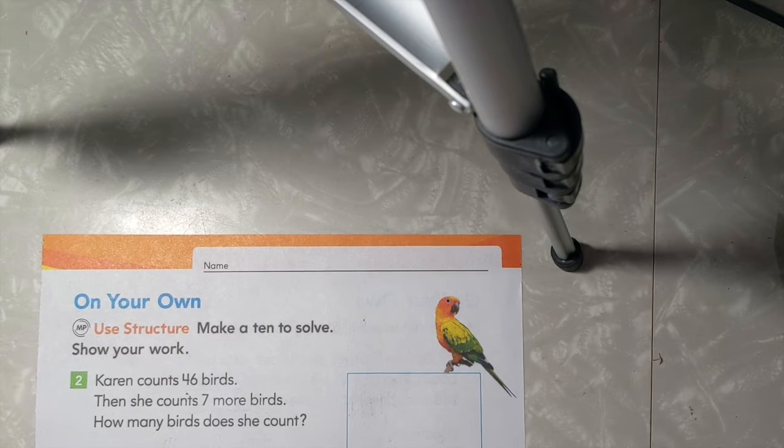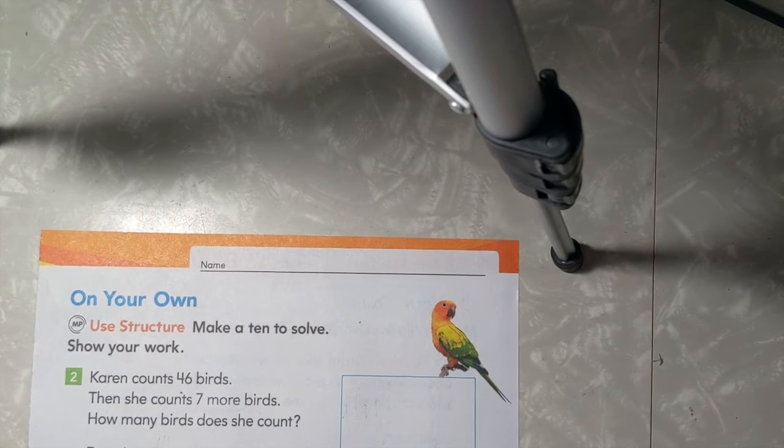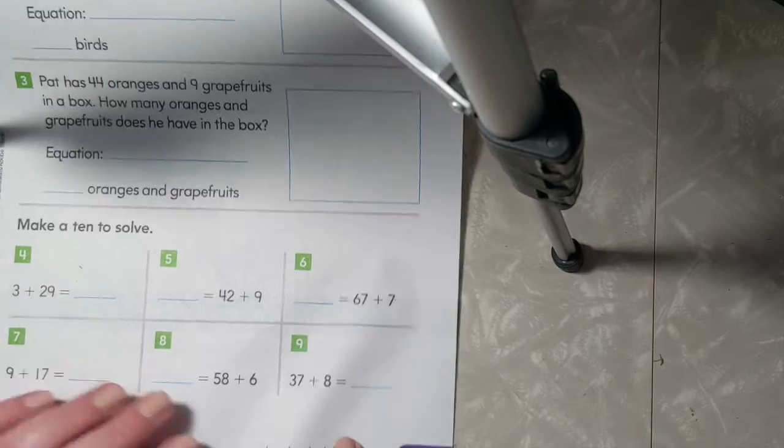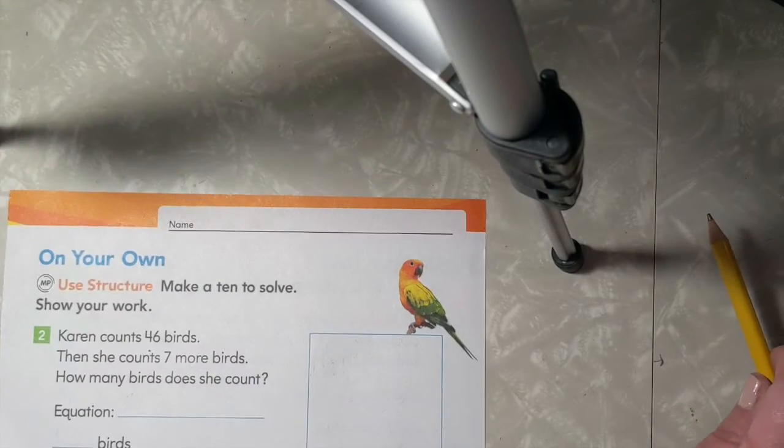Hello first graders. Today we are going to work on the on your own section for module 12.6. This can be found in your workbook on page 373. Let's go ahead and get started.